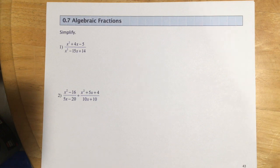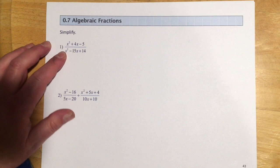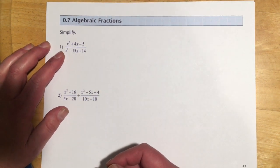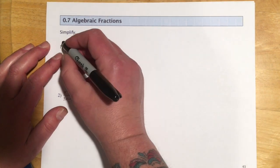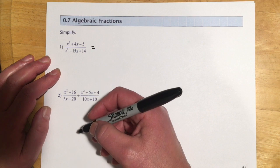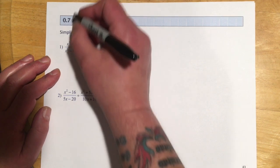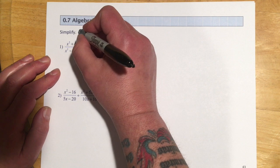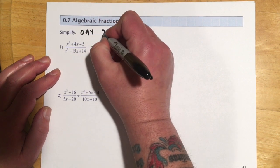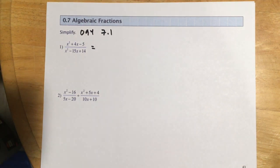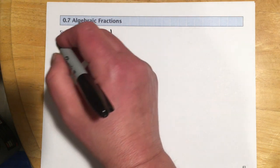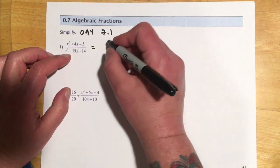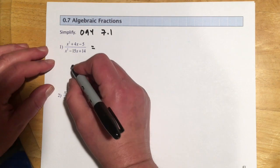This is Math 116 section 0.7 on algebraic fractions. The first thing we're doing is simplifying a fraction — to do that we factor and cancel. This material corresponds to chapter seven in Math 095, specifically section 7.1, which has videos with three or four more examples. So for reducing, we're going to factor and cancel.